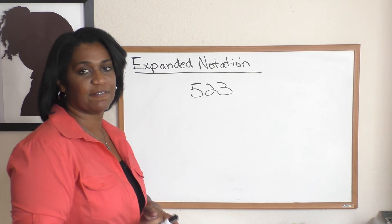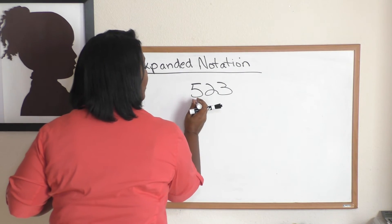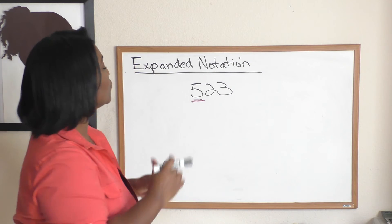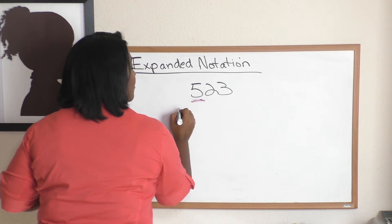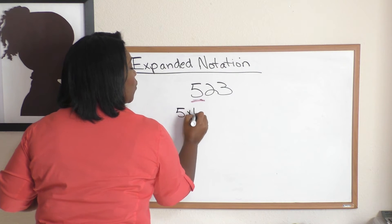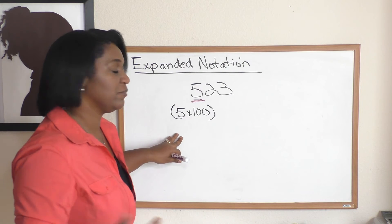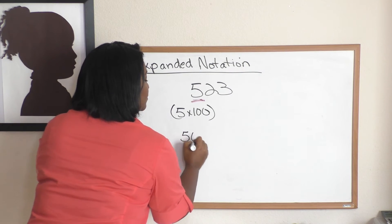Here's what I mean. Let's start with this five. The five is in which place? The five is in the hundreds place, right? So we would say five times 100, and that would give us the number 500. I'm going to write that down here.